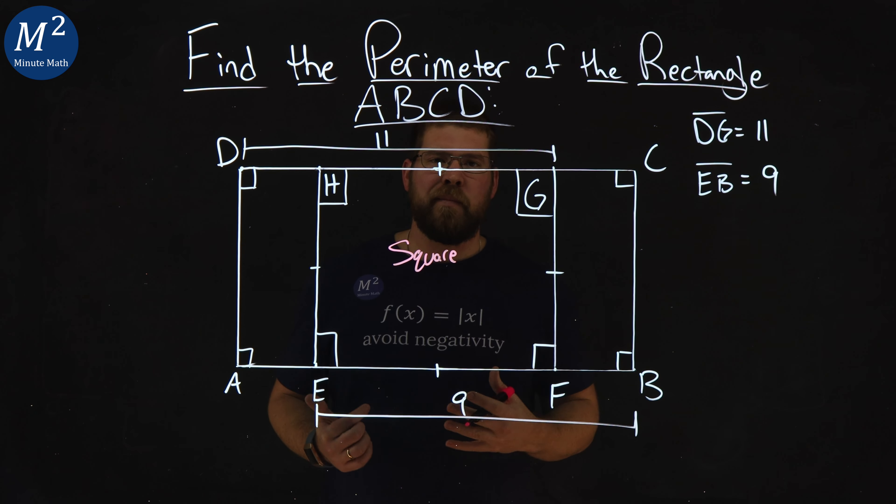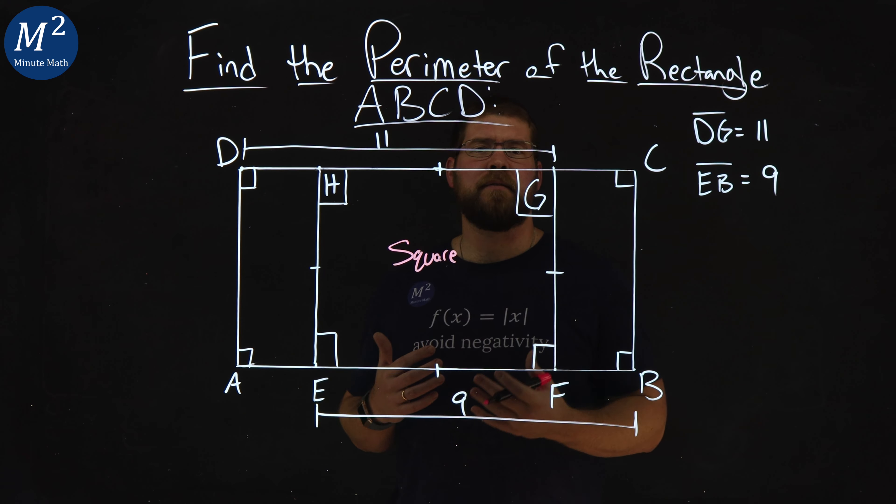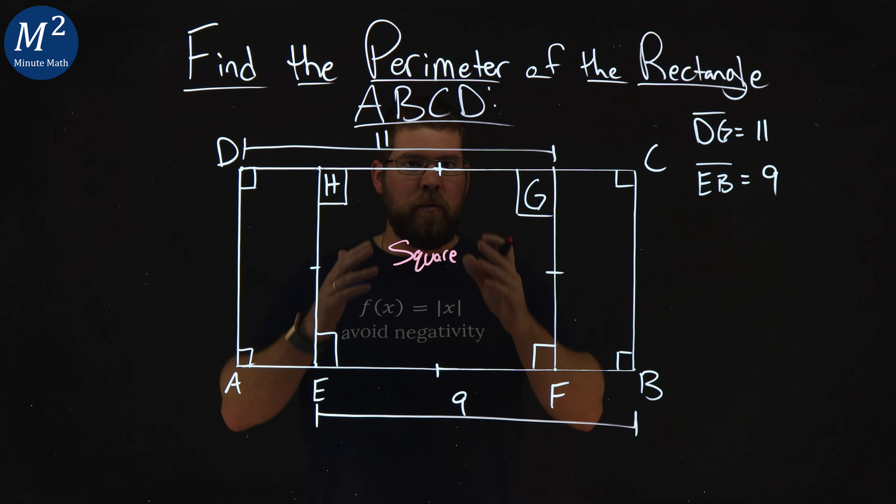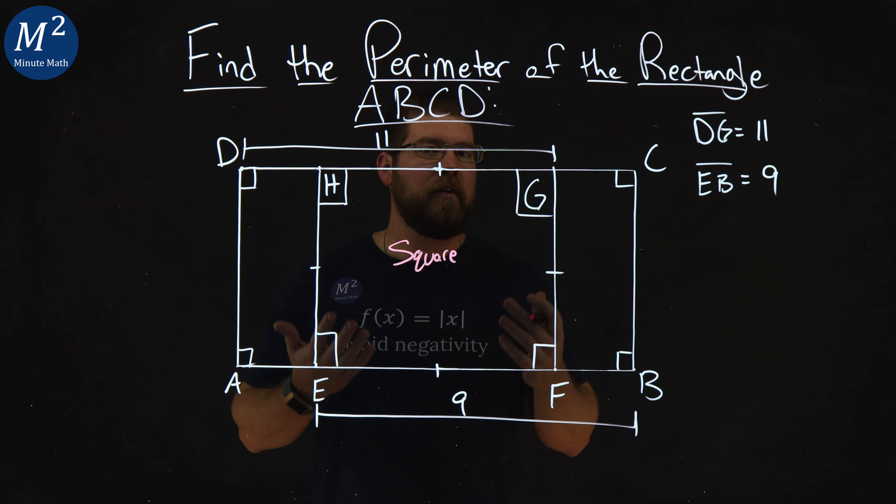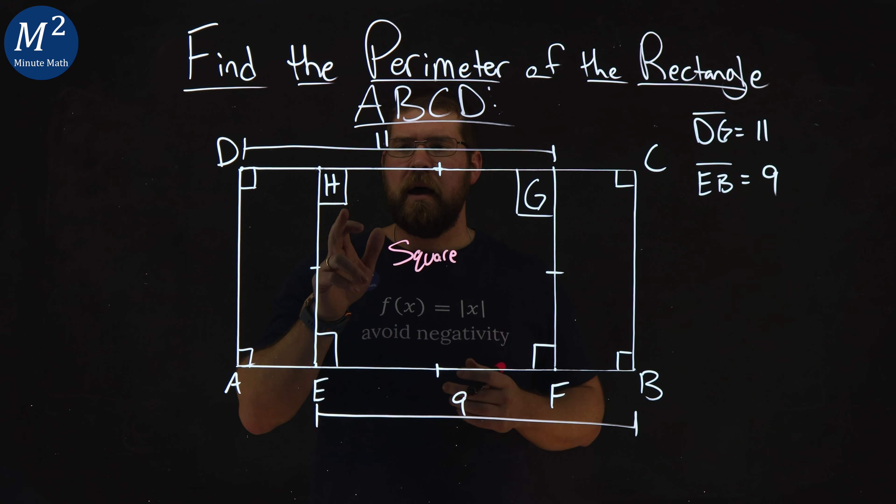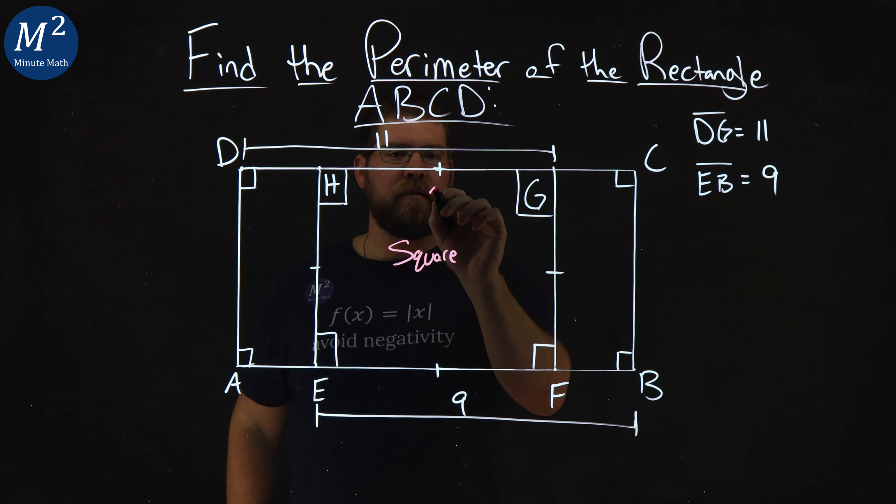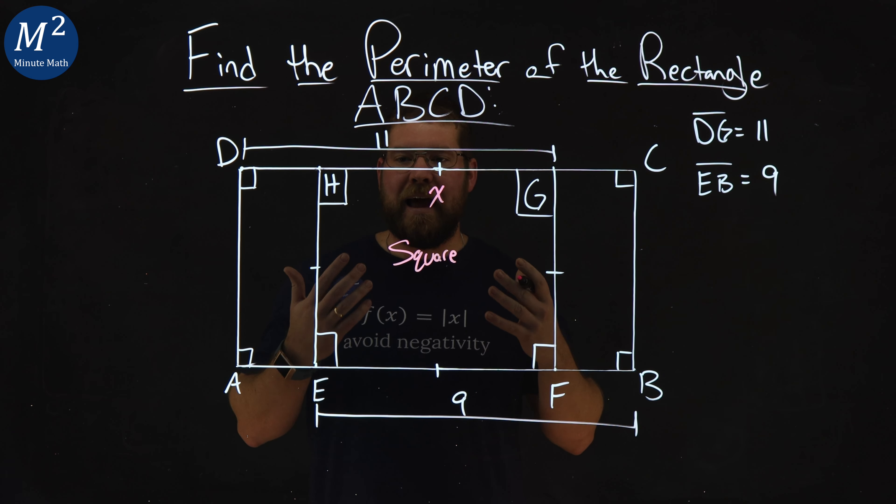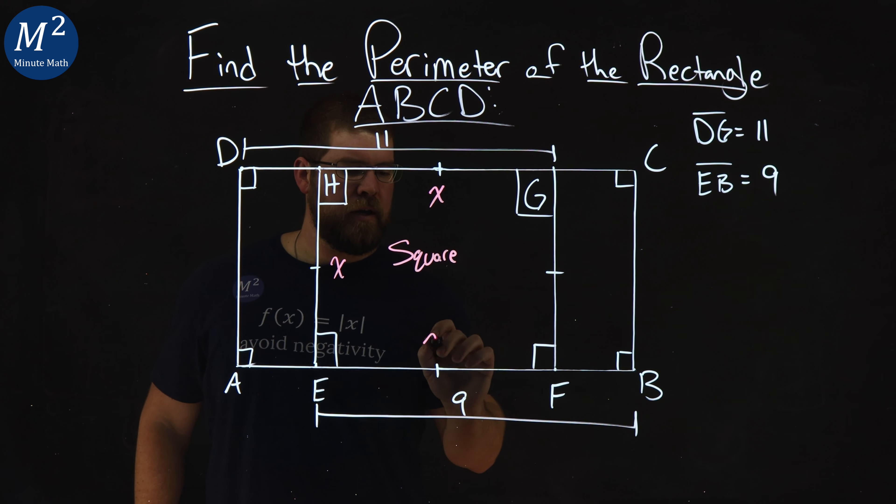So how do we tackle this problem? Well, we want to create some variables where we can. I like to see what is used often and give it the variable X. HG, that length, that distance, let's call that X, is repeated a lot. We have it here, here, and here.